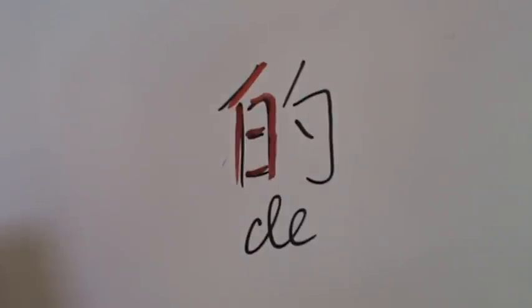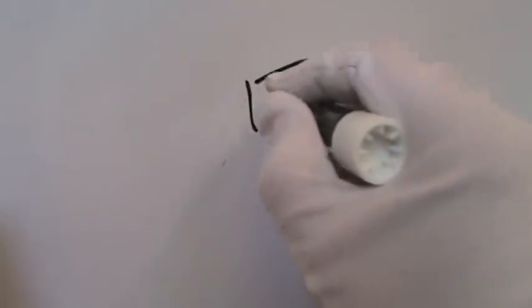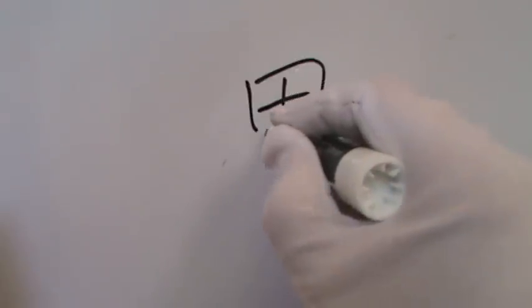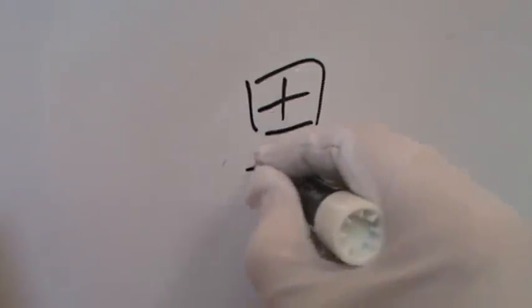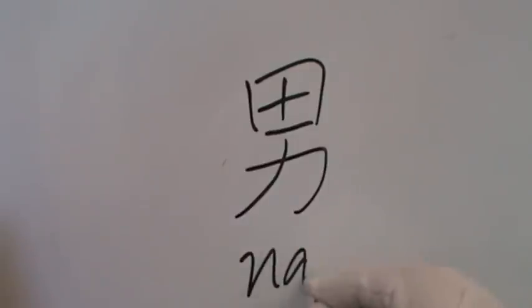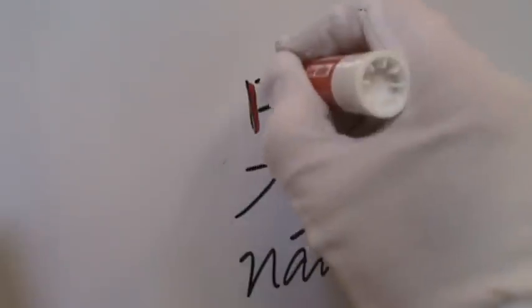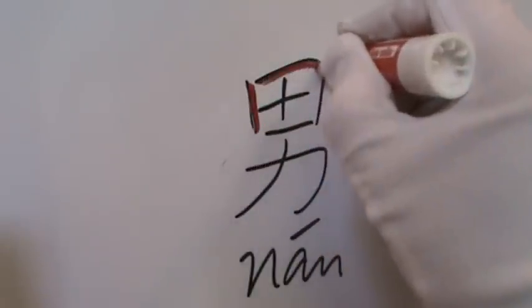Number 28: 男 (Nan), written with 7 strokes. Nan means man or male. And the radical is the top part here.